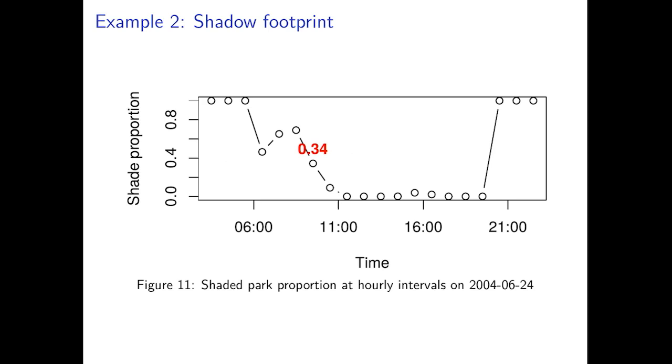If we repeat the calculation for different times of day we can create a time series of shade proportion for this park, which tells us for example that it is expected to be shaded mainly in the morning hours and not in the afternoon.